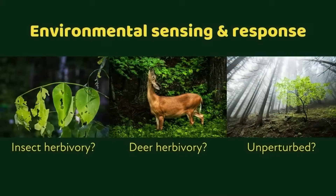In an environment where neither insects nor deer were a threat, the quaking aspen would follow a normal growth pattern and really flourish. It's amazing that the leaf is doing a lot of what a solar panel does, but so much more — it's also sensing and responding to its environment.